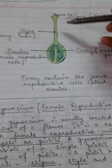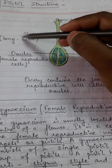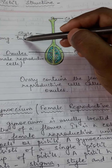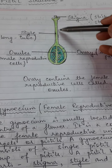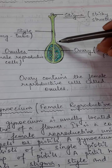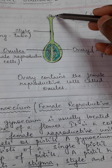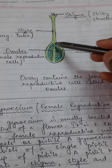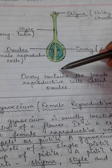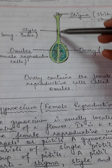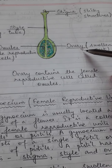Now we'll move on to style. Style is a thin, long, tube-like structure that connects the stigma to the ovary. It connects stigma to the ovary, so it plays like a connection.